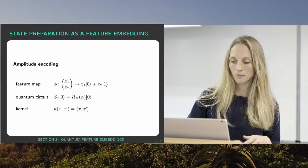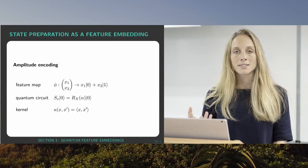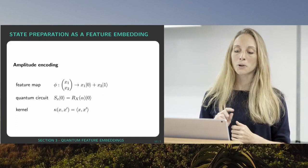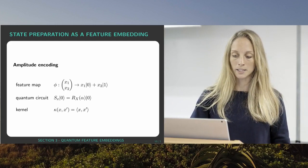Now getting to amplitude encoding. Amplitude encoding basically means that I encode a normalized vector into the amplitudes of a quantum state. And if we only have a two-dimensional vector that is normalized, so in this case x1 and x2, this vector is normalized, so its length is one. We basically just encode it into one qubit so that the amplitude of the zero state is x1 and the amplitude of the one state is x2.